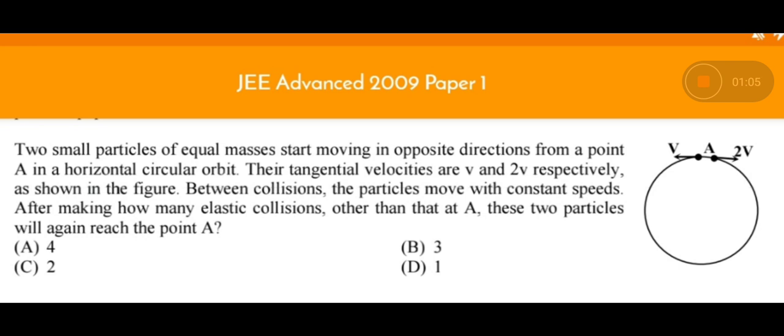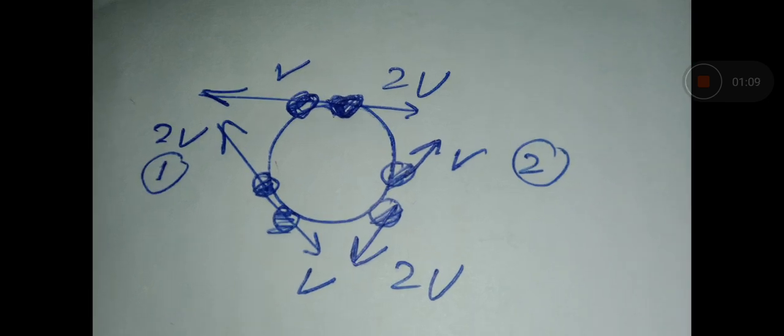Let us consider our solution. You can see these bodies will start from the top point and come to location 1. At position 1 the collision will take place and the velocities will get interchanged.